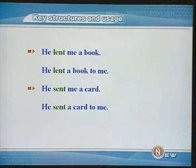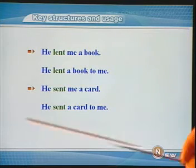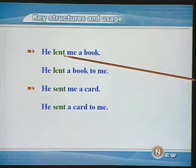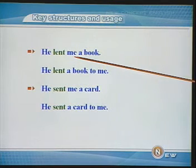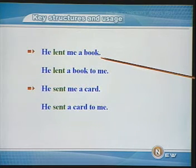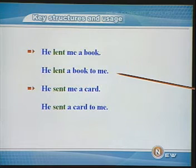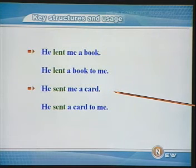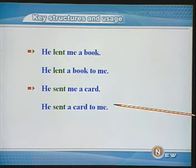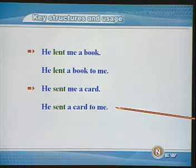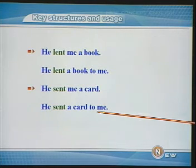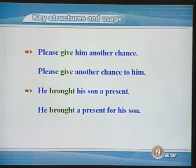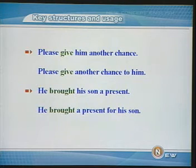He lent me a book. 他借给我一本书。在这里,me和book都是lend这个动词的宾语。Me是间接宾语,book是直接宾语。那么这句话也可以这么说:He lent a book to me. He sent me a card — 他寄给我一张卡。同样,这句话也可以改成He sent a card to me。原来的直接宾语呢,通过介词to来表现。Please give him another chance — 请再给他一次机会。这个双宾语结构也可以改成 Please give another chance to him.